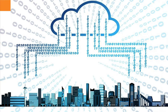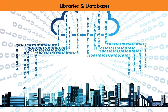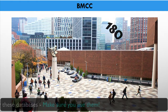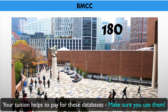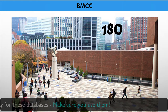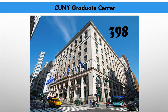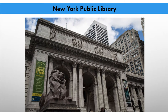Academic libraries and public libraries provide databases to their constituents. At BMCC, we have 180 databases. Other institutions have different databases. For instance, the CUNY Graduate Center lists almost 400 databases on their library's website. And if you visit the New York Public Library, you will have ready access to over 846 databases.